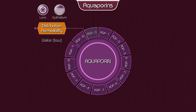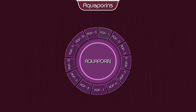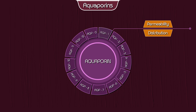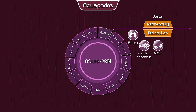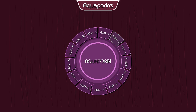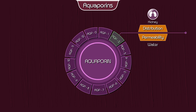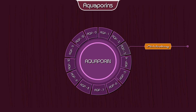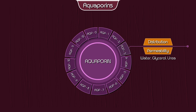Aquaporin 1 — permeability: water; distribution: the kidney, capillary endothelia, red blood cells, cornea, and choroid plexus. Aquaporin 2 — permeability: water; distribution: the kidney.